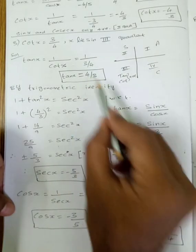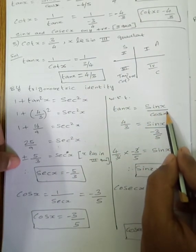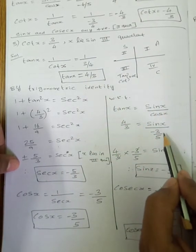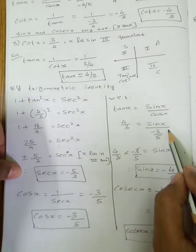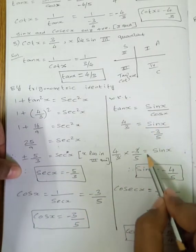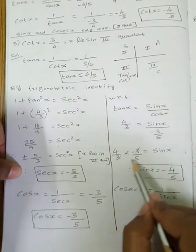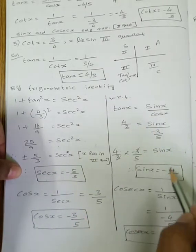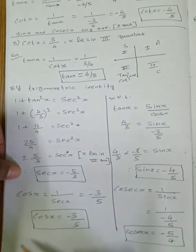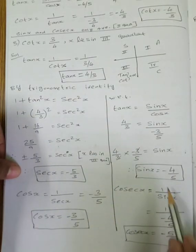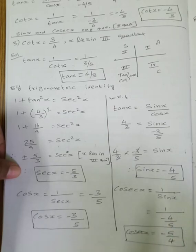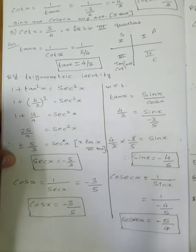Tan x equals sin x by cos x. Tan value is 4 by 3, cos x value is minus 3 by 5. Cross multiply — 3 cancels — so sin x equals minus 4 by 5. Cosecant x equals 1 by sin x, which is 1 by (minus 4 by 5), so cosecant x equals minus 5 by 4.